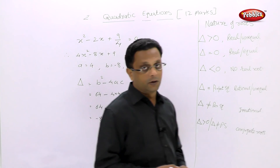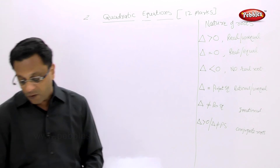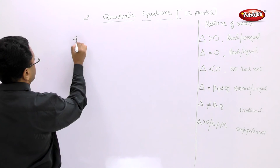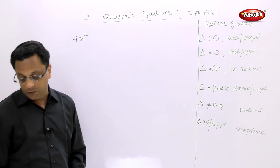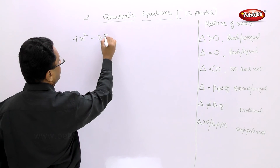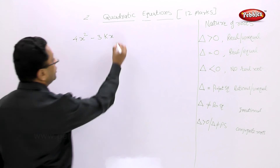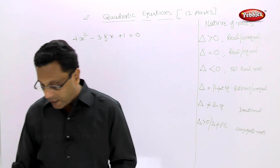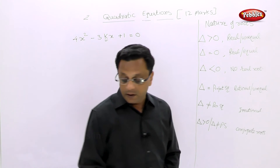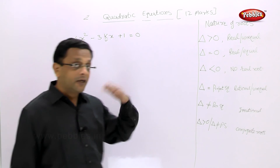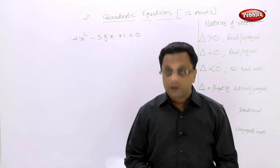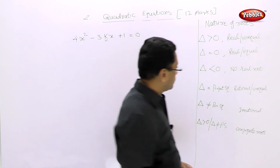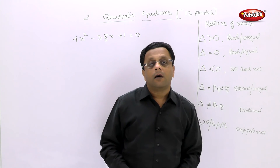The third kind of question is: find the value of k if the given equation 4x² - 3kx + 1 = 0 has real and equal roots. When we get real and equal roots, the discriminant is 0. So we have to find the value of k when the discriminant equals 0.